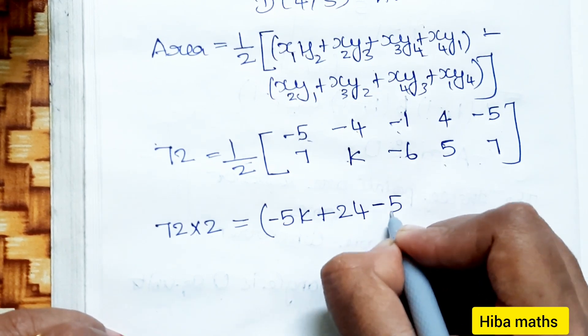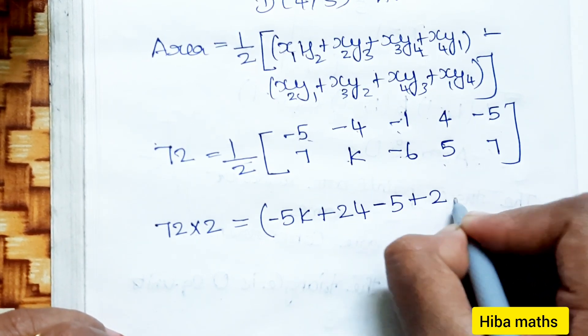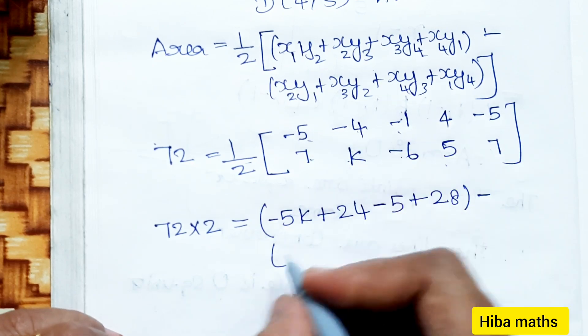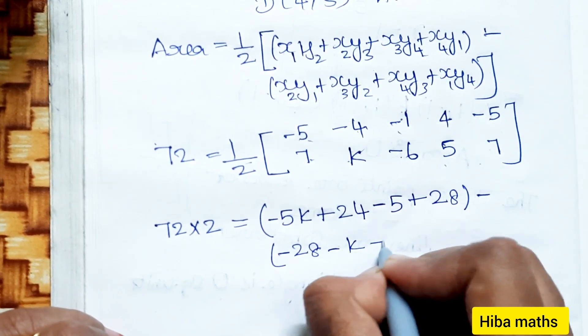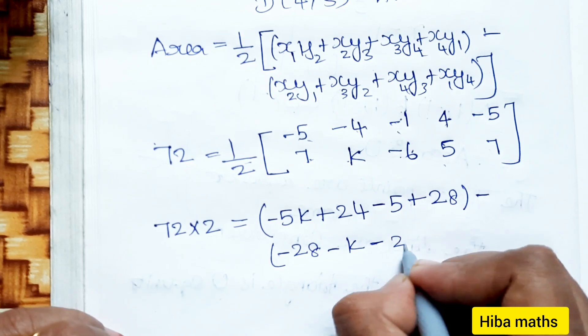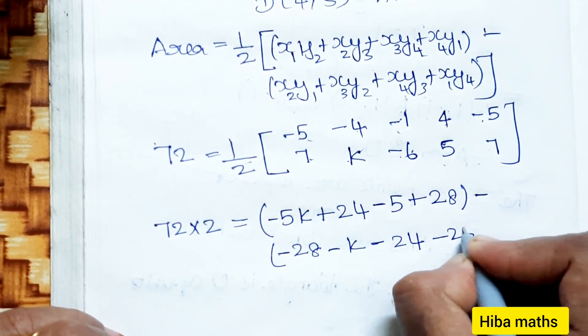Minus 1 into 5 is -5, 7 times 4 is 28, minus 28, minus 2 times -K, minus 6 times 4 is 24, minus 25.